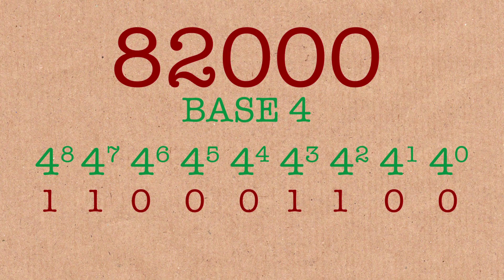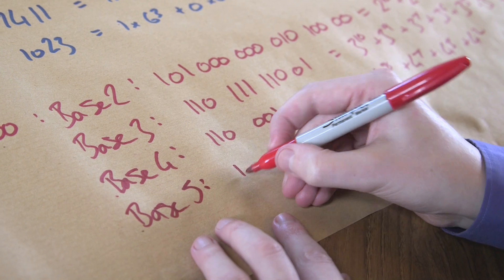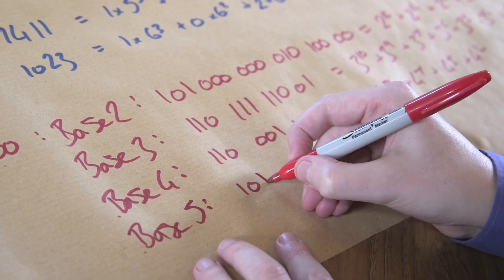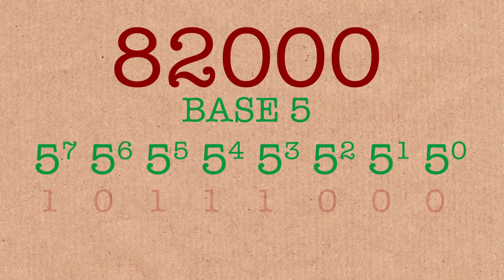Let's do one more — base 5. What are you expecting to happen? In base 5, it's: 1, 0, 1, 1, 1, 0, 0, 0. What's happened is that 82,000, in every base — base 2, base 3, base 4, base 5 — it's written as only 1s and 0s. It's always 1s and 0s.